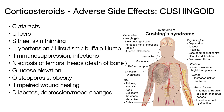Remember CUSHINGOID: cataracts, ulcers, striae and skin thinning, hypertension, hirsutism and buffalo hump, immunosuppression and infections, necrosis of femoral heads — death of bone tissue due to lack of blood supply — glucose elevation, osteoporosis and obesity including the classic moon face, impaired wound healing, diabetes, and depression or mood changes.